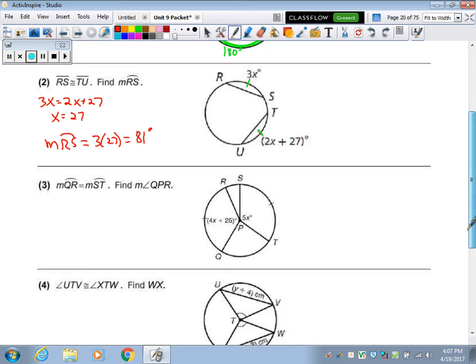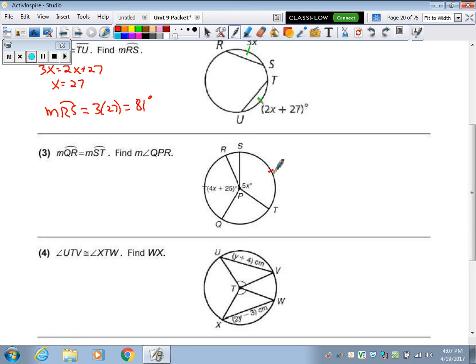What about this guy? Well, this is a congruent arc, so that means the angles are congruent. So I can say that 4x plus 25, whoops, I drew over it. It has to equal 5x. Minus 4x minus 4x. x is 25. So the angle QPR is 4 times 25 plus 25.